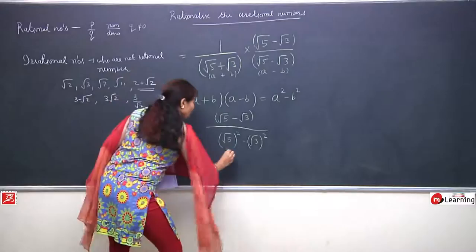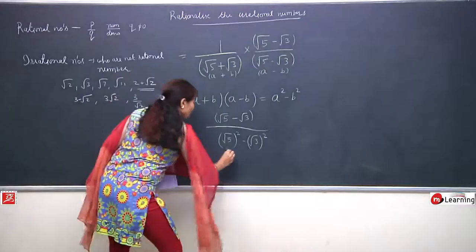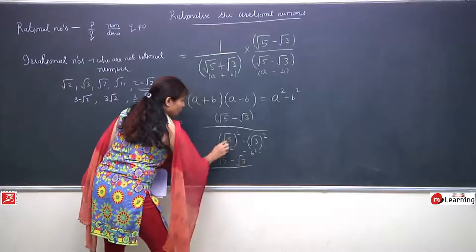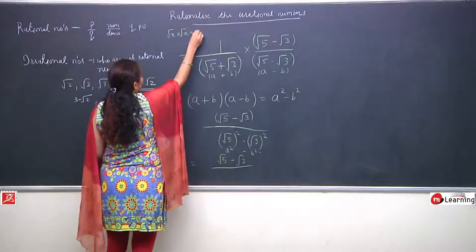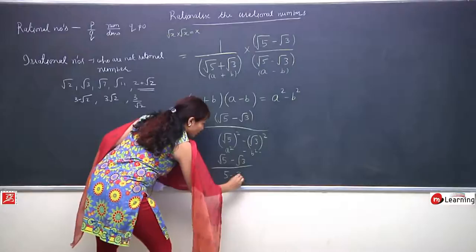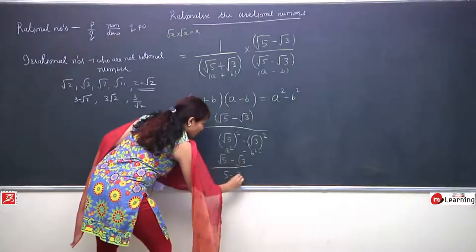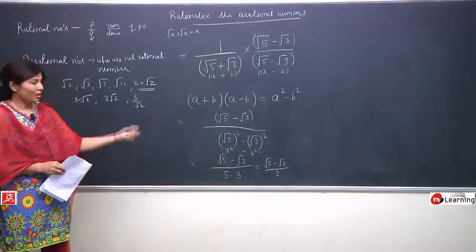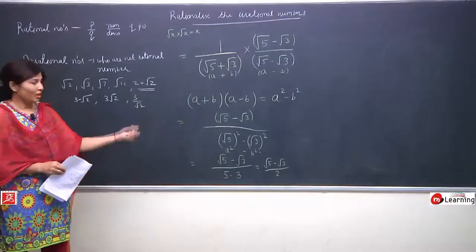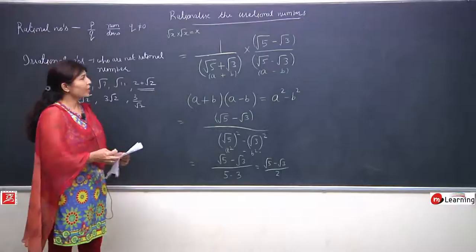Whenever we have (a + b) multiplied by (a - b), it always equals a² - b². See how much drastic change applying this identity brings to the question. Root 5 squared means root 5 multiplied by root 5 which is 5, and root 3 squared becomes 3. So the denominator becomes root 5 minus root 3 upon (5 - 3) = 2. See what the denominator was before, and after rationalization it is totally changed. The irrational number has been removed and it is now a plain rational number.